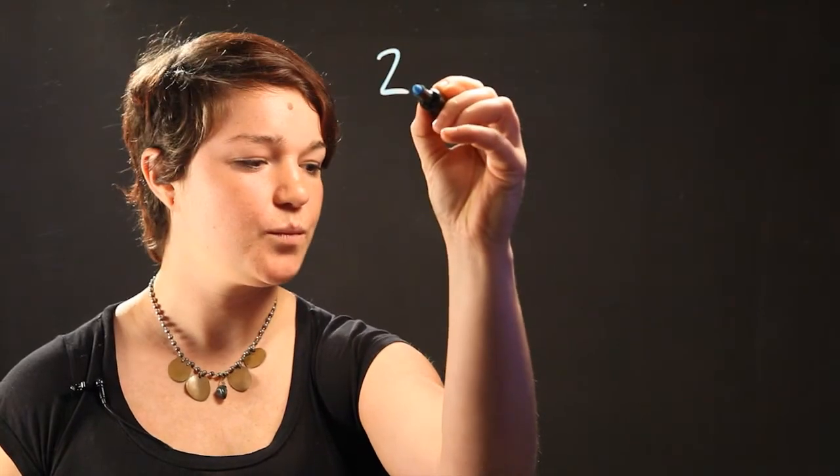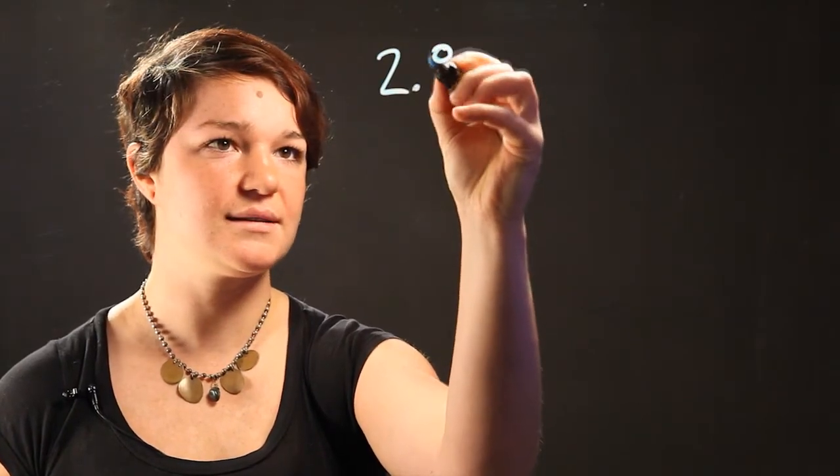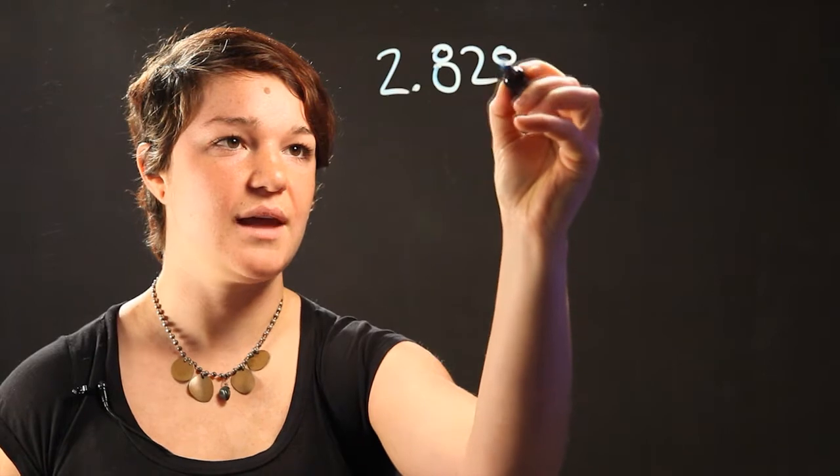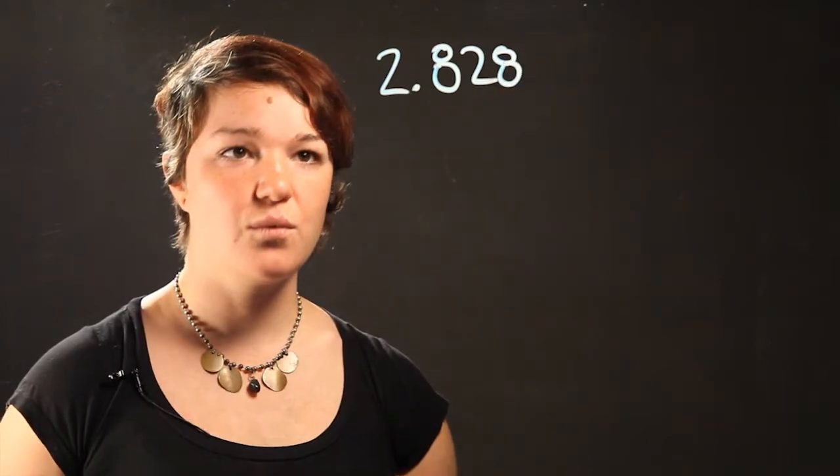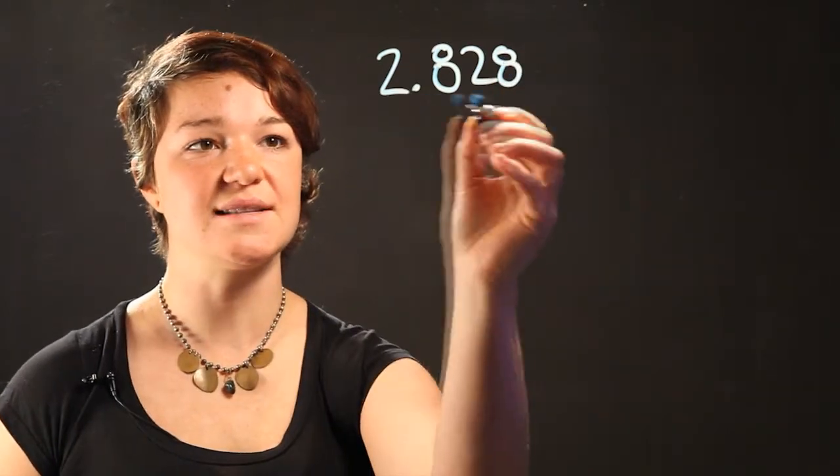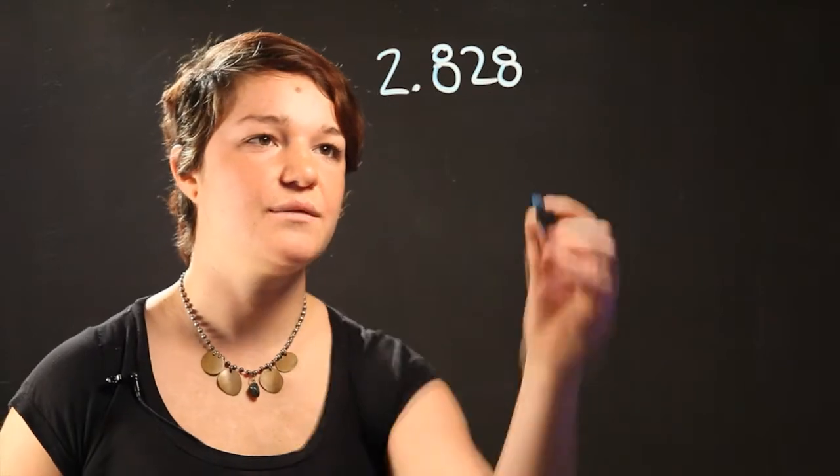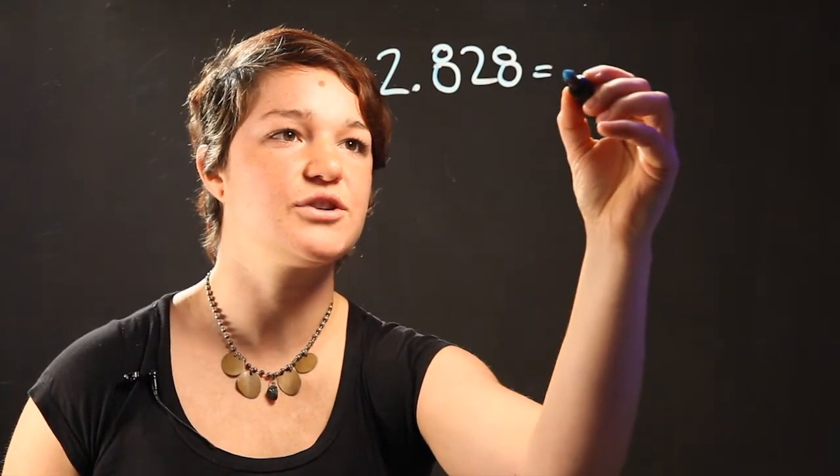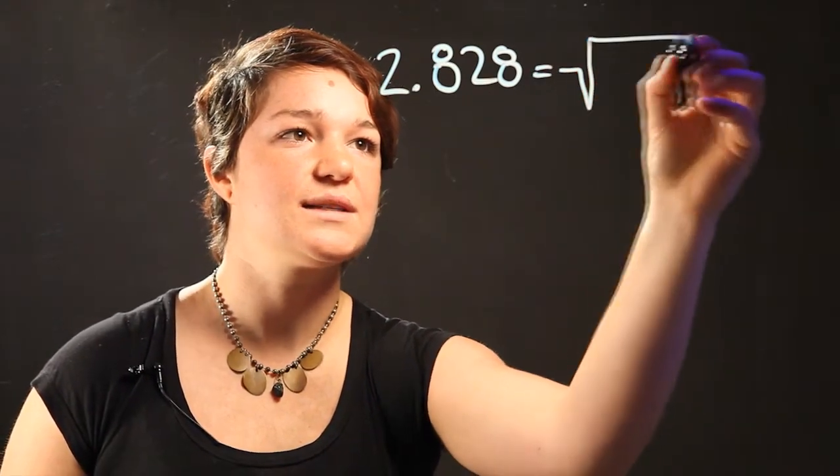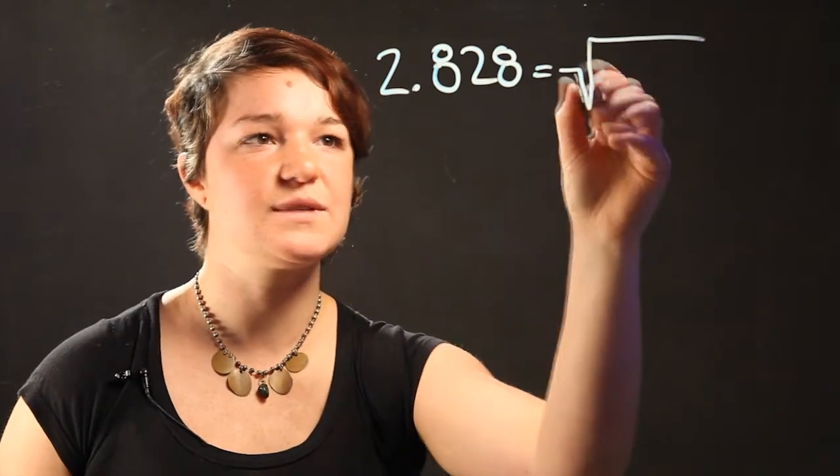Let's start off with a decimal such as 2.828. So you're required to turn this decimal into a radical. A radical is a function with a square root, a cubic root, or some kind of root.